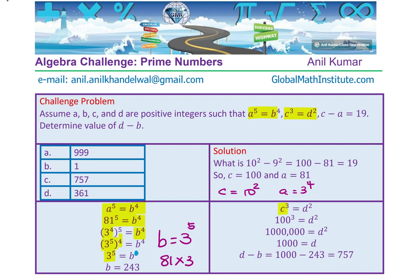To find the value of D from C, substitute 100 for C. 100 cubed is 1 million. Square root of 1 million is 1,000. So we get the value of D as 1,000. The difference between D and B is 1,000 minus 243, which is 757.